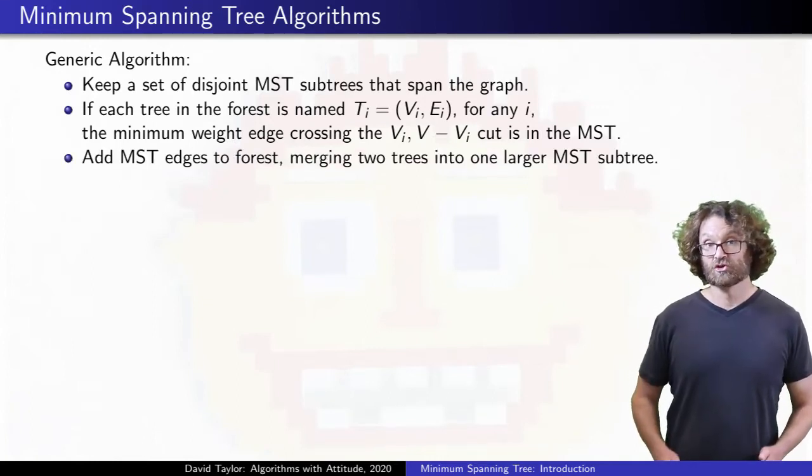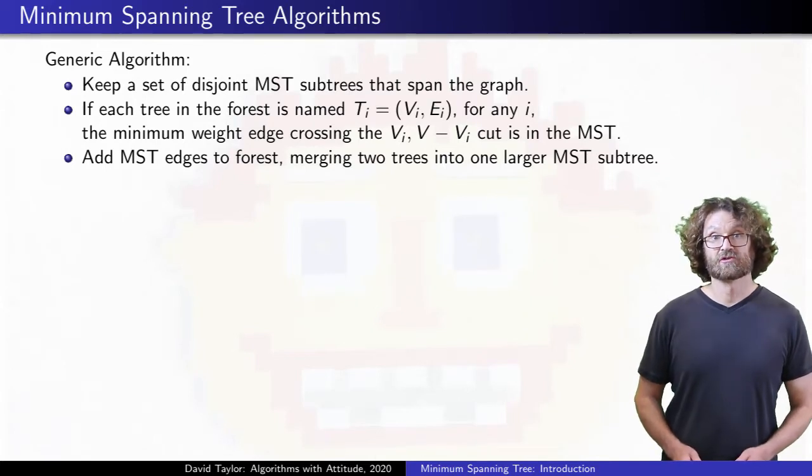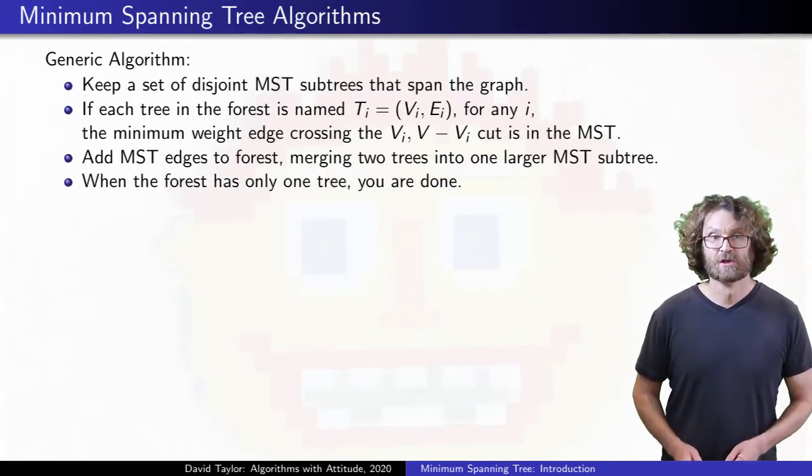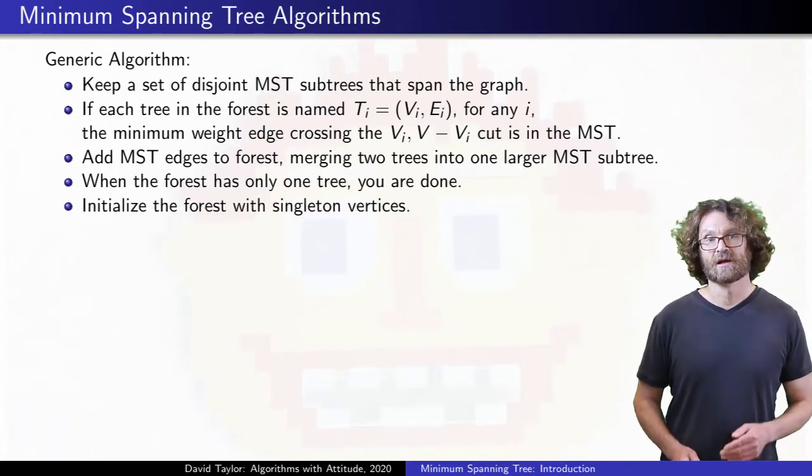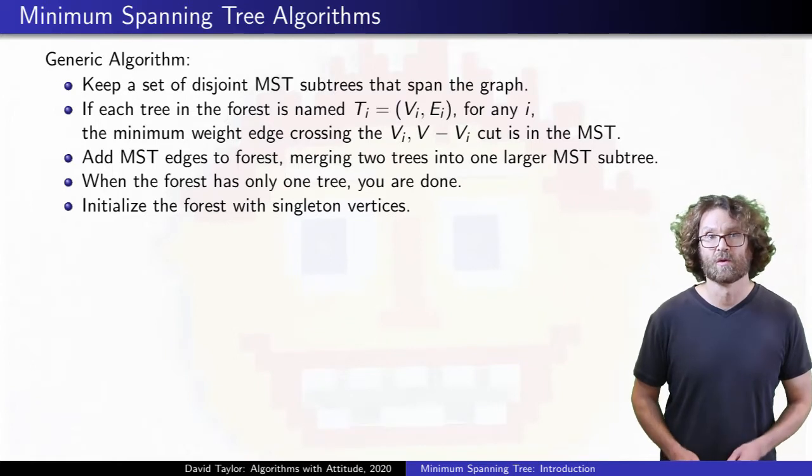Each edge merges two trees into one, until there is just one tree left, the minimum spanning tree. To initialize the forest, each vertex is in its own uninteresting tree with no edges.